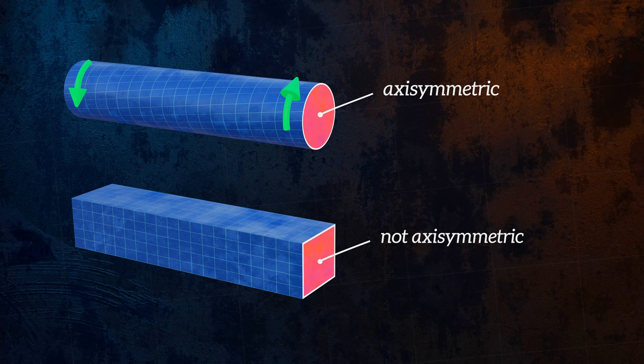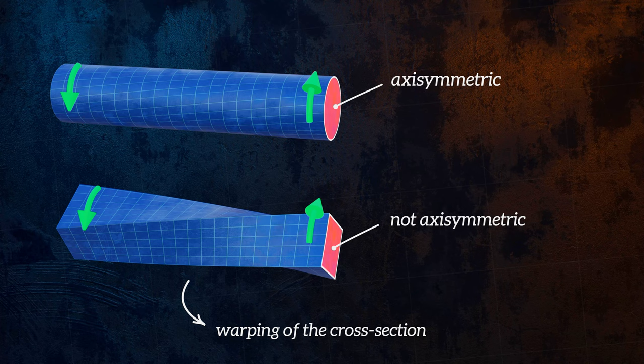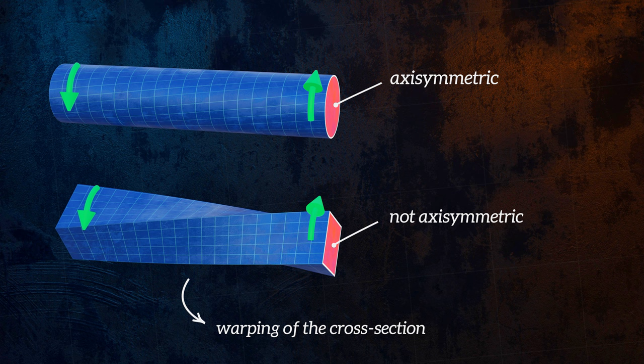A bar with a rectangular cross section is not axis symmetric, and so torsion results in warping of the bar cross sections. This warping is complex, so in this video we will keep things simple and only consider torsion as it relates to circular bars.